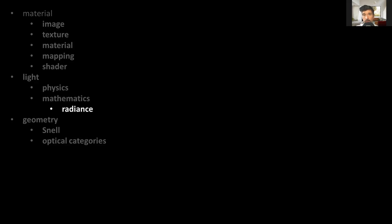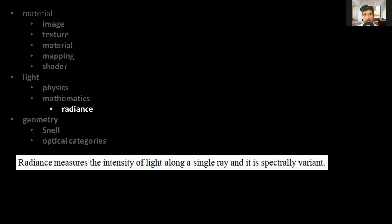When covering the topic of light, one of the most important features is radiance, which gives us the ability to measure light. More specifically, radiance measures the intensity of light along a single ray and is spectrally variant.